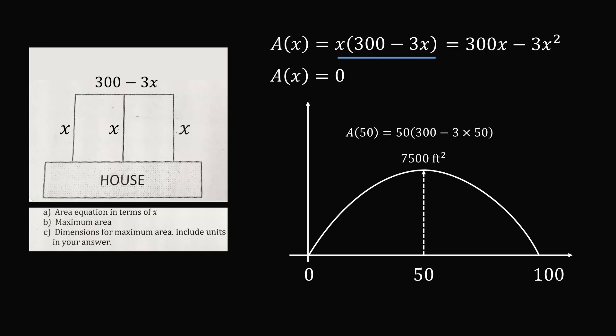We have solved that x is equal to 50, so we know that one dimension is 50 feet. The other side is 300 minus 3x, and that works out to be 150 feet. And that's one way to solve the problem.